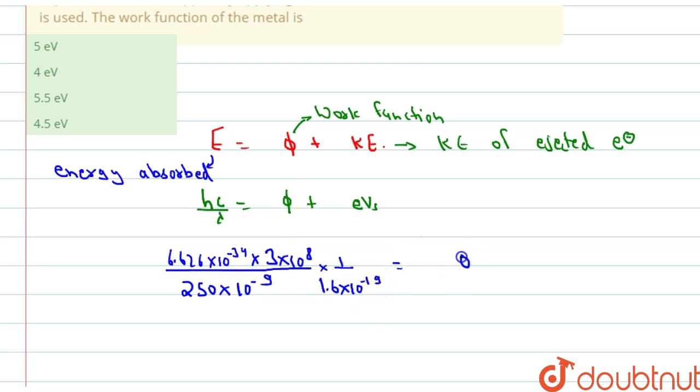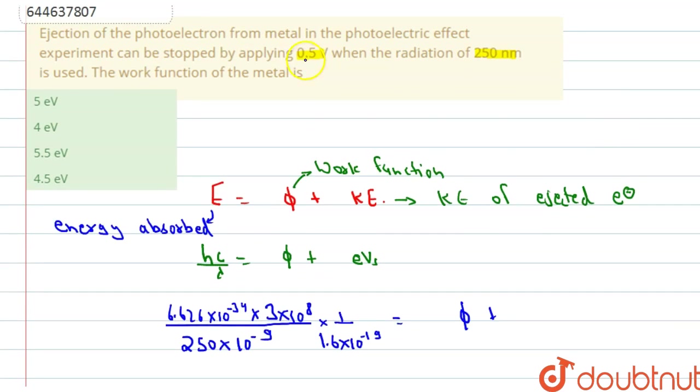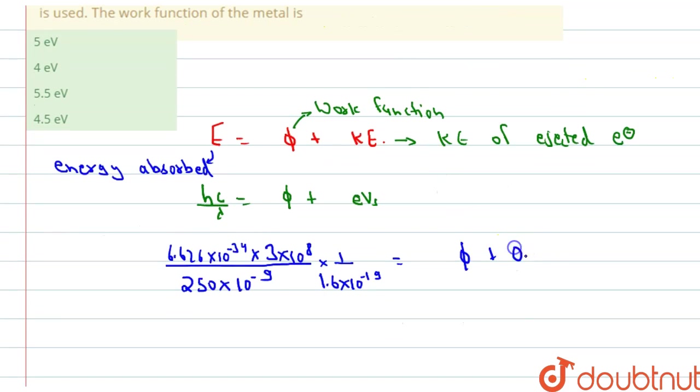Now this equals Phi plus this is e Vs, which is given to us is 0.5 electron volt. This is 0.5 electron volt. This E is here. Now this whole unit is electron volt as well. So this is electron volt. The answer of Phi which we will get is also in electron volt.